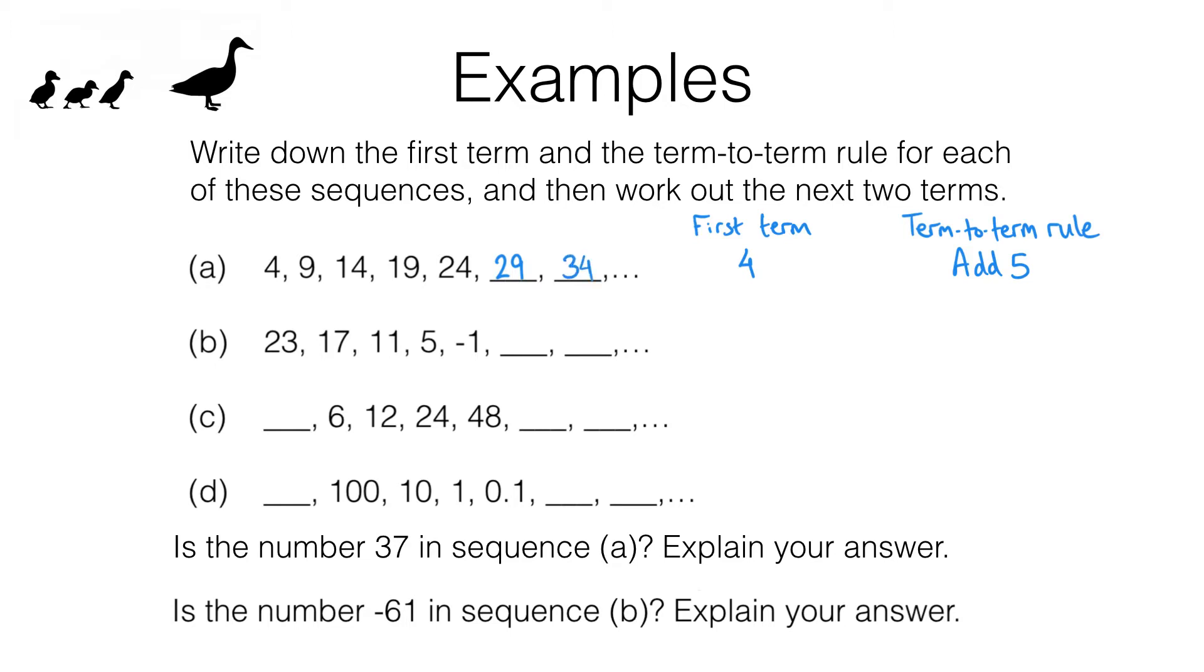Pause the video and have a go at question B for yourself. You should have found that the first term is 23 and the term-to-term rule is subtract 6. To find this term of the sequence we need to subtract 6 from negative 1 and that gets us to negative 7. To find the next term we need to subtract 6 from negative 7 and that takes us to negative 13.